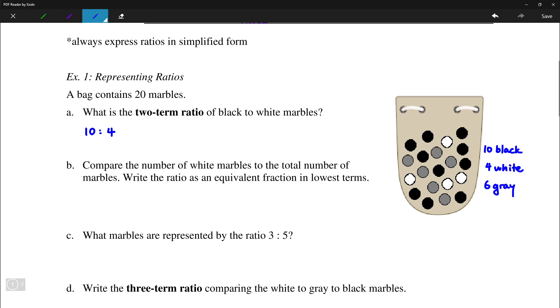So for expressing ratios we should have simplified form. So notice that these two numbers are both divisible by 2. So we can write this ratio instead as 5 to 2.